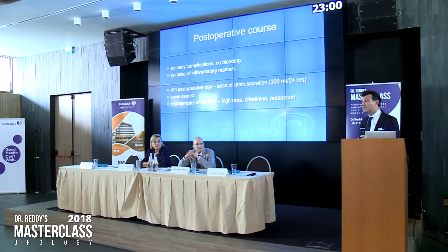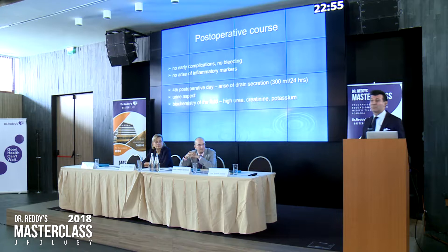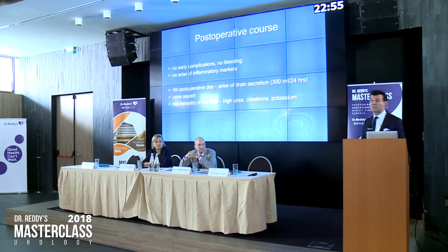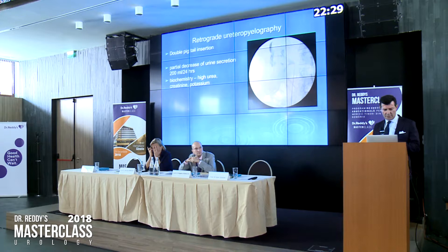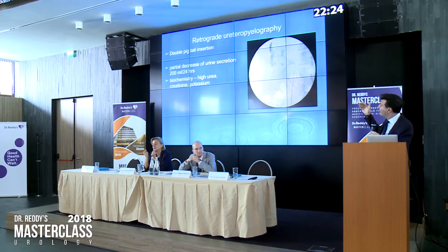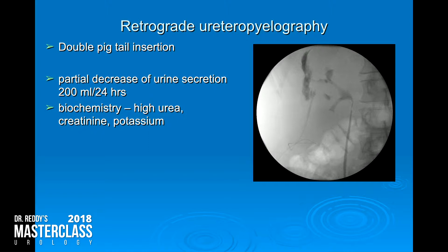We thought it was fistulation from the calyx or from the pelvis. We did a retrograde — you have to do that. We saw externalization and put in a double J stent. We had an immediate decrease of urine secretion — the pigtail worked. We left the drainage inside but biochemistry still showed high urea, creatinine, and potassium. So there was still some drainage.